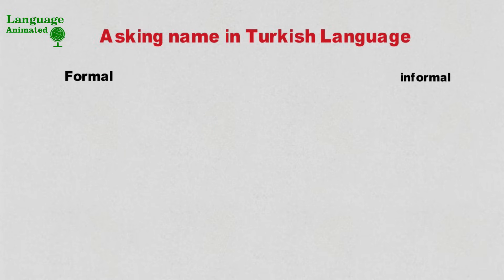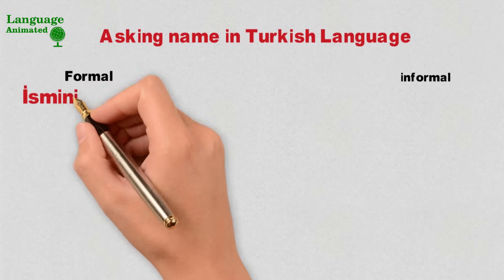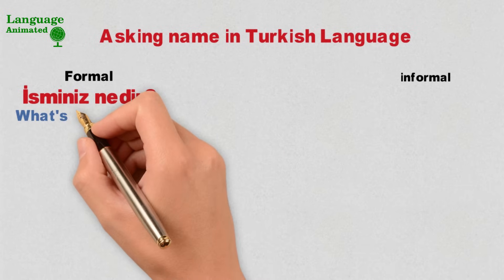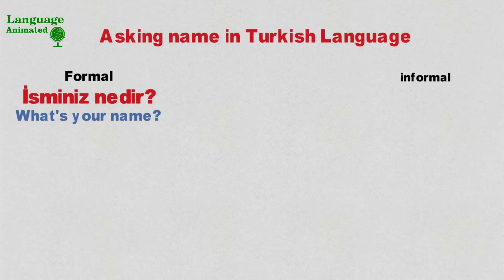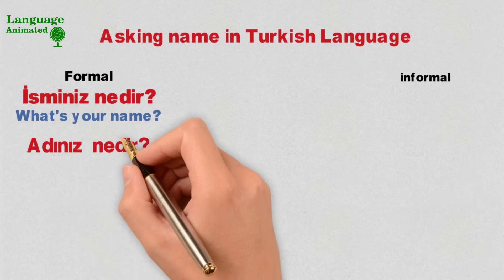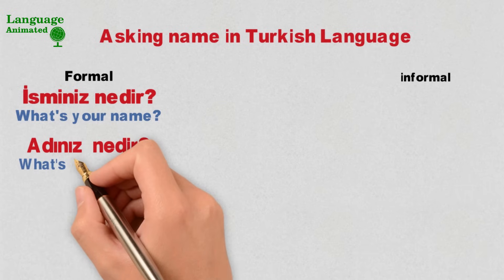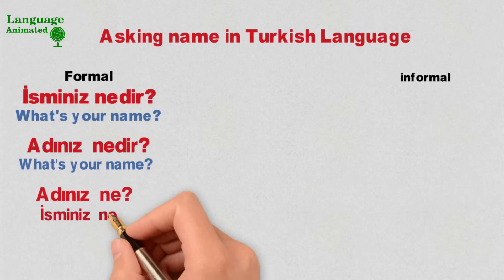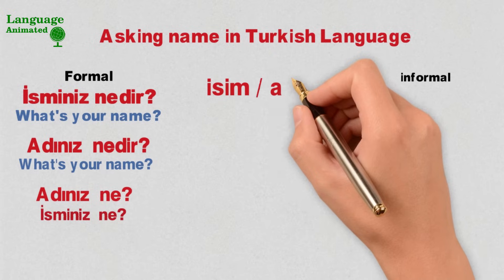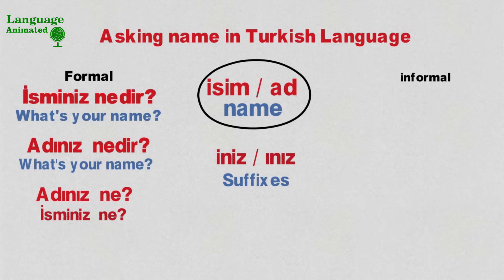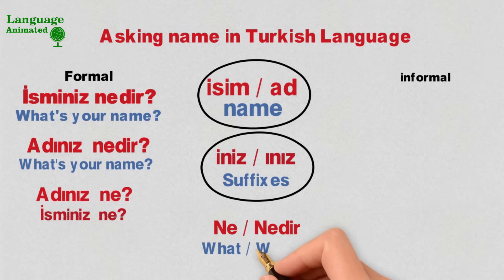The best formal way to ask someone's name is 'isminiz nedir,' which means 'what's your name' in a formal way. The second formal way is 'adınız nedir,' which also means 'what's your name.' You can also say 'adınız ne' or 'isminiz ne.' Here 'ism' and 'ad' both mean 'name,' and the last parts of these words are suffixes which we will learn in grammar lessons. 'Ne' and 'nedir' both mean 'what' or 'what is.'